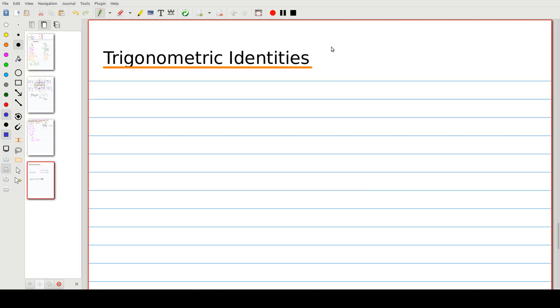Alright so in this trig summary video we're just going to be looking at trigonometric identities and doing one example. We'll list the identities and do one example of proving left hand side equals right hand side.